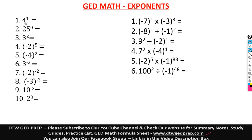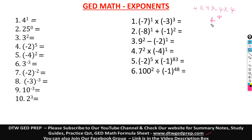The first question is 4 raised to power 1. Exponents are all about repeating multiplication — instead of writing 4 times 4 times 4 times 4, you write 4 raised to power 4. The top number is the power, or exponent, and the bottom number 4 is your base.